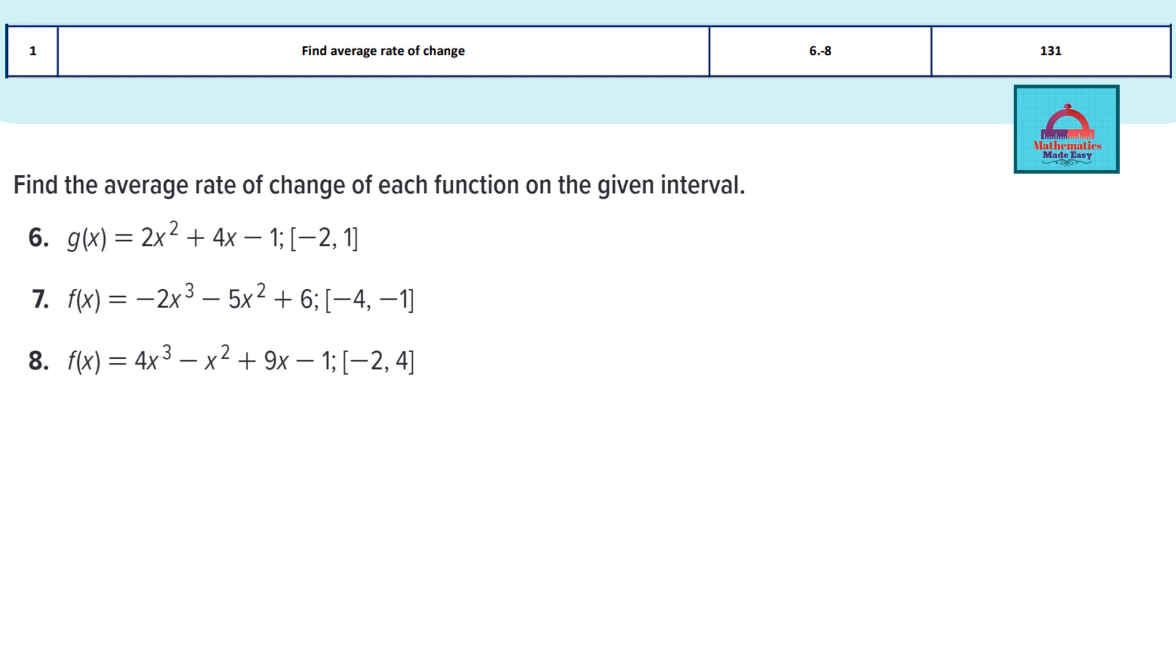Now the concept that we are going to use for average rate of change for a given function, if the given function is say f(x), then the average rate of change of the function f(x) over an interval [a, b], this is a closed interval which is given to you, you can calculate using the formula f(b) minus f(a) divided by b minus a. So you have to learn this formula. This formula we are going to be using for solving all these 3 questions.